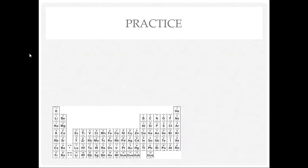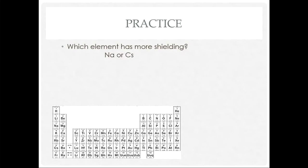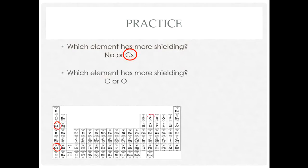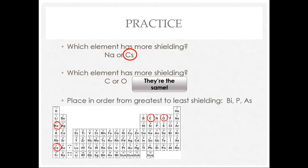Let's look at some practice problems. Which element has more shielding: sodium or cesium? Cesium has more shielding because it's on the sixth energy level versus the third — six shields versus three. Which element has more shielding: carbon or oxygen? They have the same shielding because they're on the same period. Place bismuth, phosphorus, and arsenic in order from greatest to least shielding: bismuth has the greatest and phosphorus has the least.